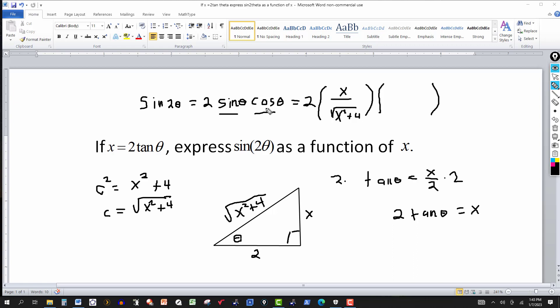And then for cosine, again from the triangle, cosine is the adjacent side over the hypotenuse. So this will be 2 over the square root x squared plus 4.